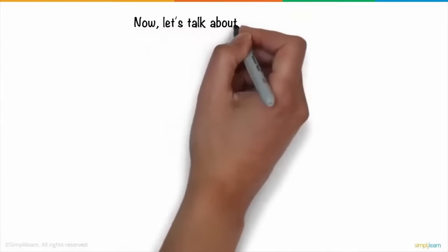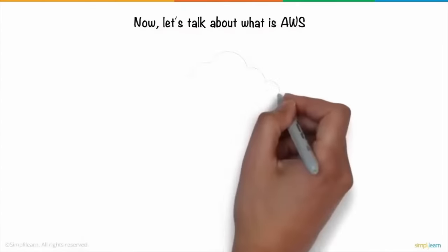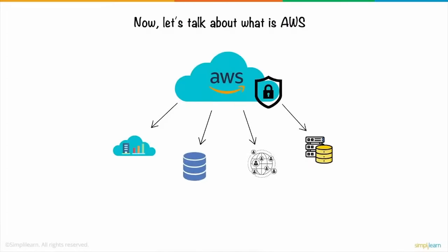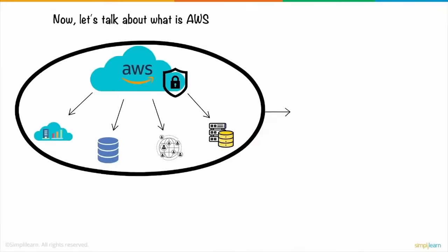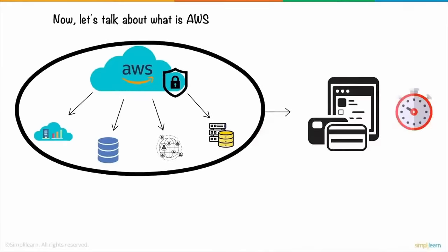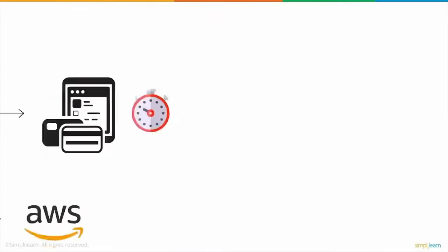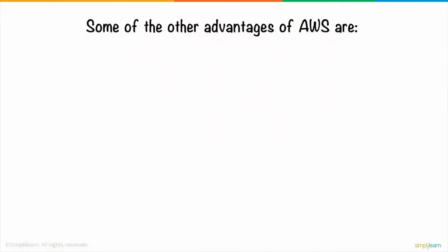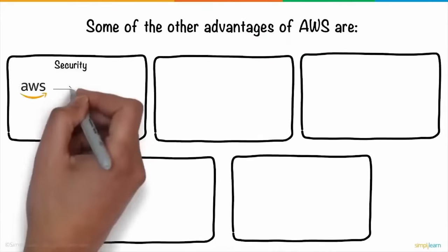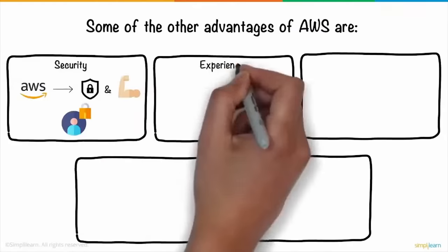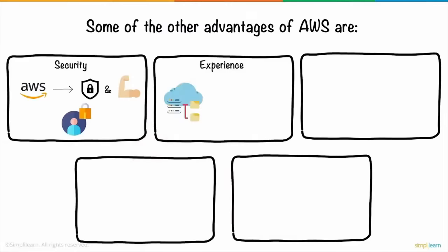AWS, or Amazon Web Service, is a secure cloud computing platform that provides computing power, database, networking, content storage, and much more. The platform also works with a pay-as-you-go pricing model, which means you only pay for how much of the services you use. Some of the other advantages of AWS are: security — AWS provides a secure and durable platform that offers end-to-end privacy and security; and experience — you can benefit from the infrastructure management practices born from Amazon's years of experience.